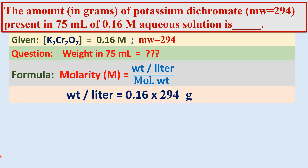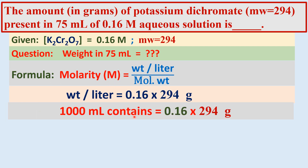Let us substitute. Weight per liter — let us calculate first: weight per liter is equal to molarity into molecular weight. So, 0.16 into 294 gram per mole. Now, this is for 1 liter.